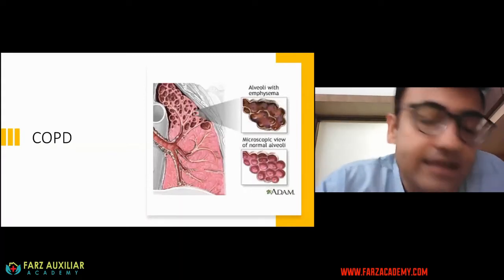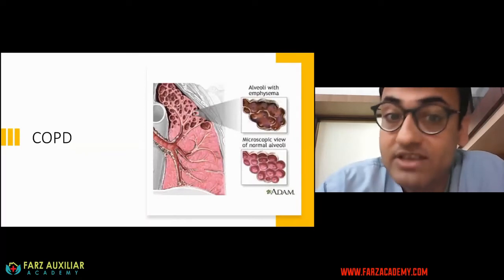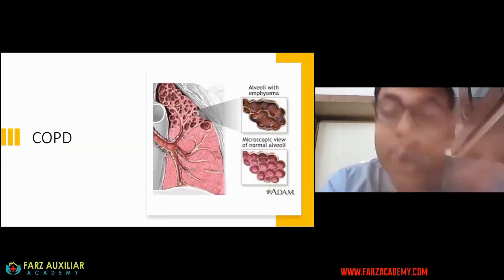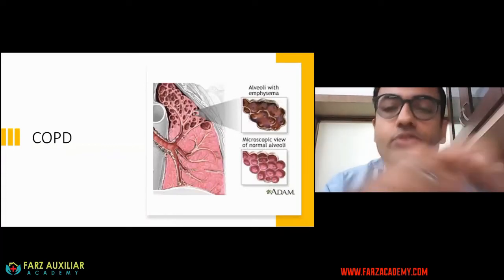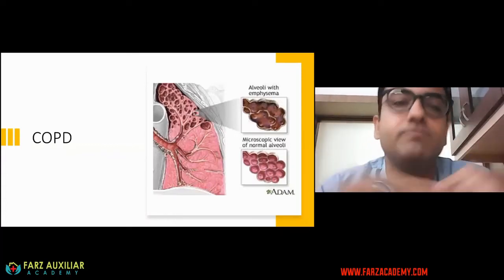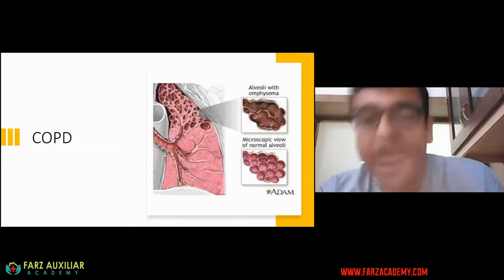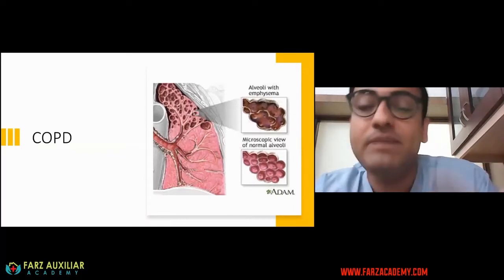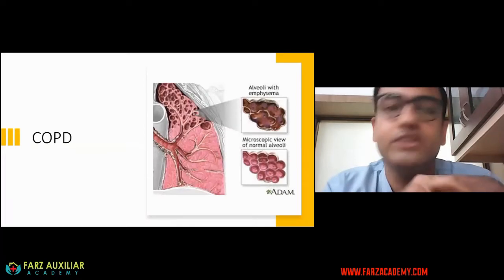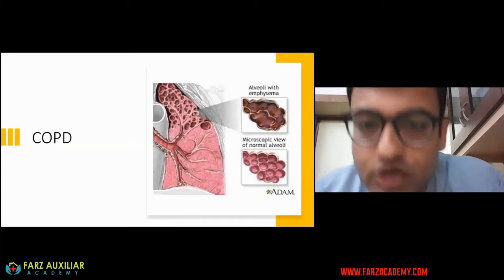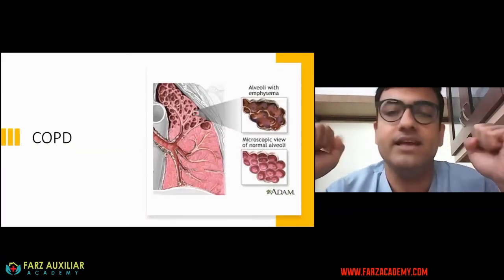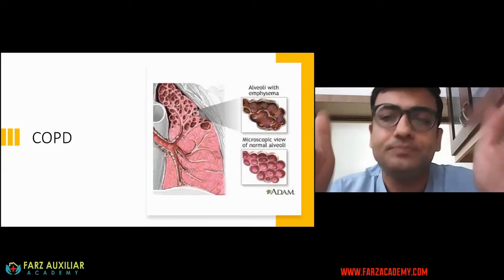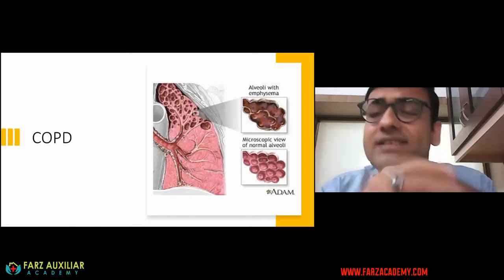Along with that, there will be lung parenchymal damage as well. Because of the lung parenchymal damage, there will be loss of the elastic recoil of the lung, making it very difficult for the person to push air out. So there will be air trapping inside, an increase in the end-expiratory lung volume or functional residual capacity, which eventually will encroach on the total lung capacity, so no further new tidal volume can get inside the lungs.